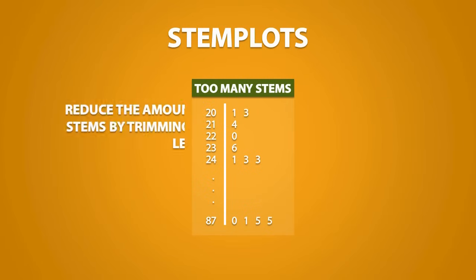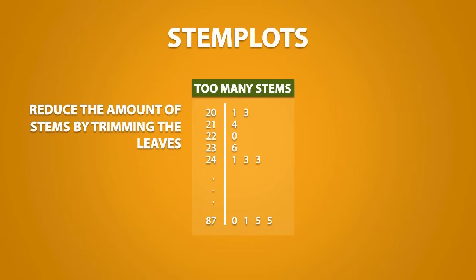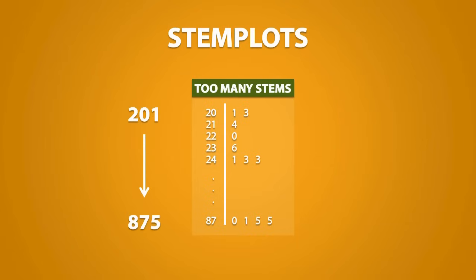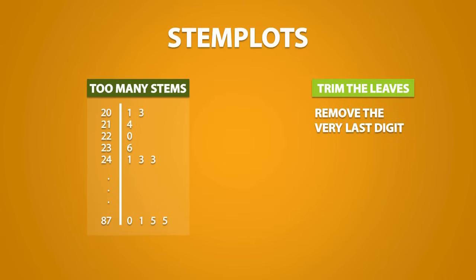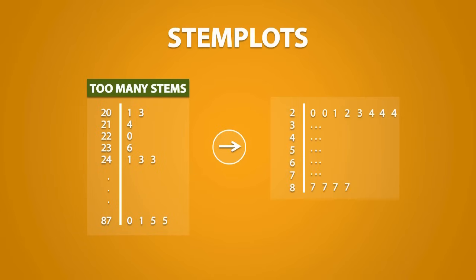When we have too many stems, we can reduce the amount of stems by trimming the leaves. In this example, we have a very large dataset that goes from 201 all the way to 875. That's over 60 stems that we have to write. To trim the leaves, all we do is remove the very last digit. So notice for the number 201. The leaf is 1, and the stem is 20. After removing the very last digit, we get 20. So now the leaf becomes 0, and the stem is now 2. We would do the same process for each data value. By trimming the leaves, we get a better looking stem plot. Notice how we have reduced the amount of stems by doing this, and we have saved ourselves the trouble of having to write down over 60 stems.